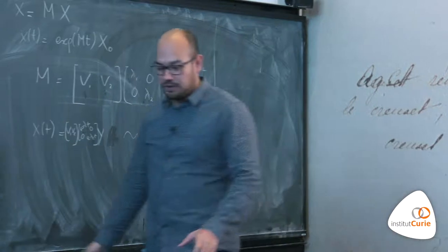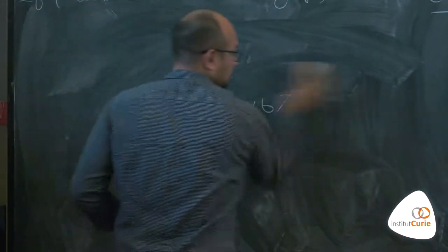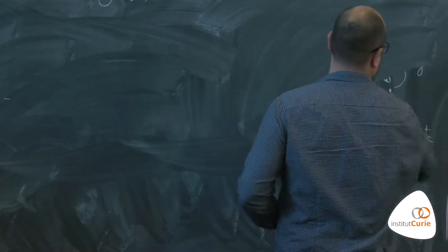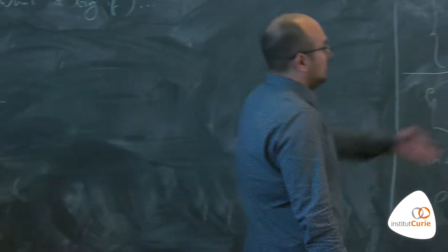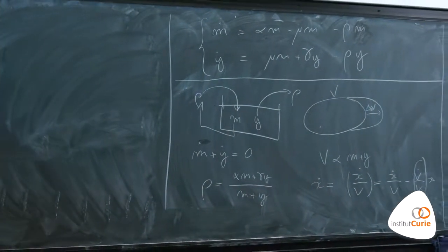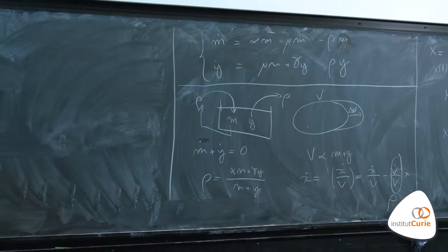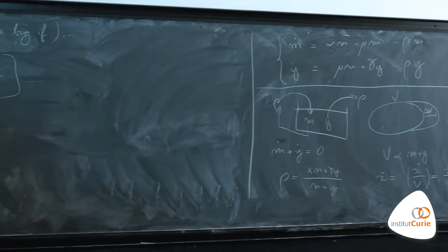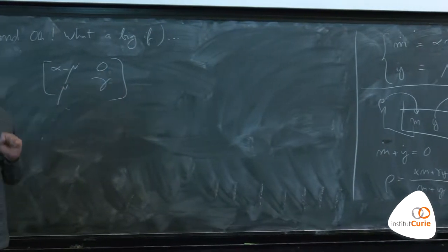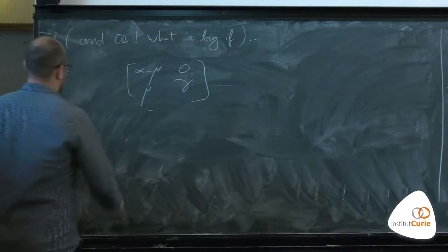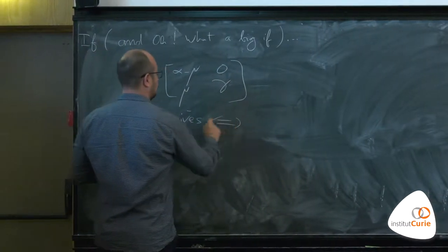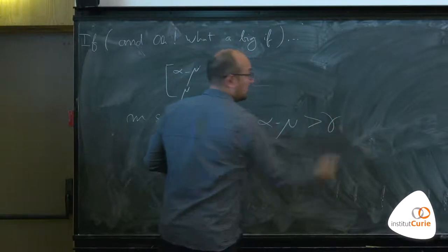So when does M survive? My matrix M here would be: alpha minus mu, mu, gamma, 0 — it's a lower diagonal matrix, so the eigenvalues are the same as the diagonal elements. M survives when the corresponding condition is satisfied.